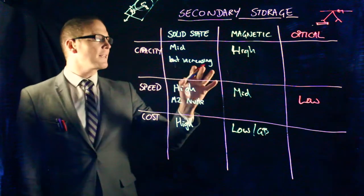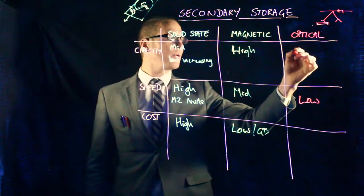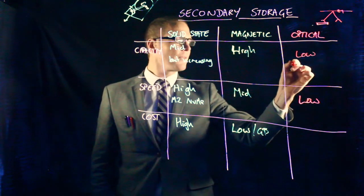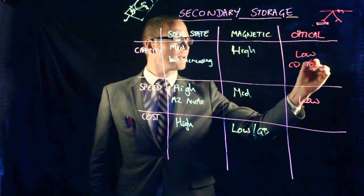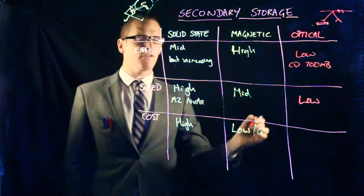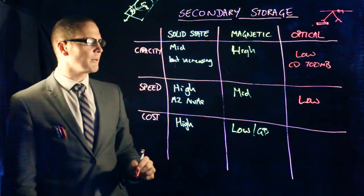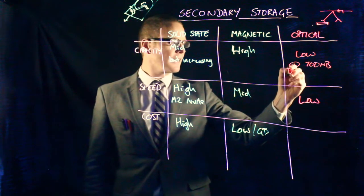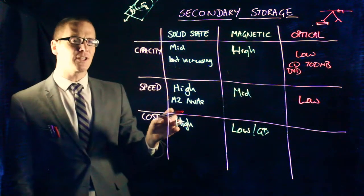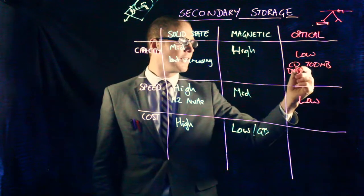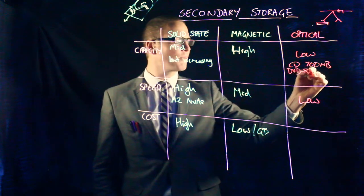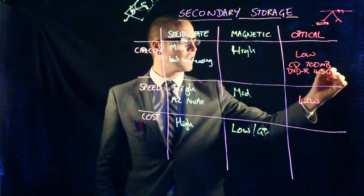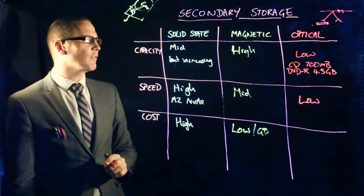In terms of capacity, mid range to low end. Your CD is going to give you approximately 700 megabytes of information. That's not a huge amount. The DVD is going to give you 4.7 gigabytes per layer per side. And usually, if you're DVD writable, you're looking at four and a half gigabytes of user writable information.